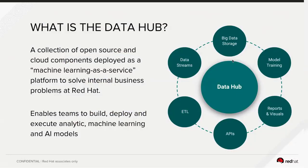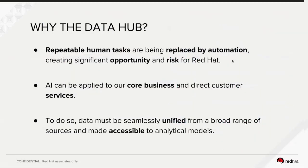You can think of the Data Hub as a collection of open source components, with the foundation being OpenShift and Kubernetes. Some of the things we're tying into it include doing data streams, storing big data, model training, execution of those models, basic ETL requirements, providing APIs, and then visuals and reports on top of that.